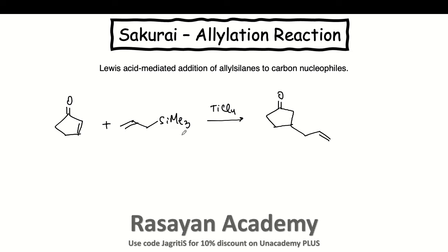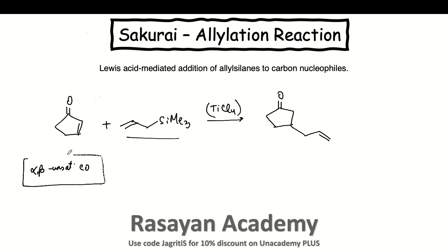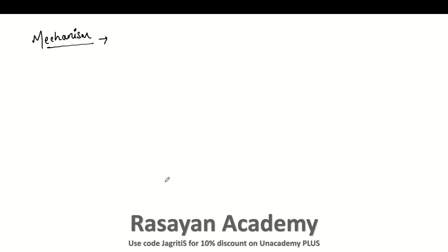An alpha-beta unsaturated carbonyl compound reacts with your allylsilane in the presence of any Lewis acid to give this kind of a molecule. Now, if there is no alpha-beta unsaturated compound and you only have a direct carbonyl compound, we need to talk about both of these possibilities in this reaction.